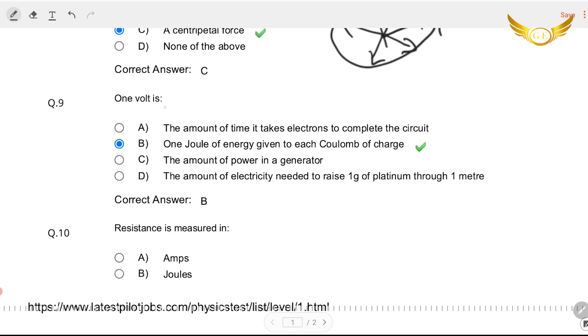Question nine. One volt is, the answer for that is, one joule of energy given to each coulomb of charge. This is the definition of volt. You just have to remember this.